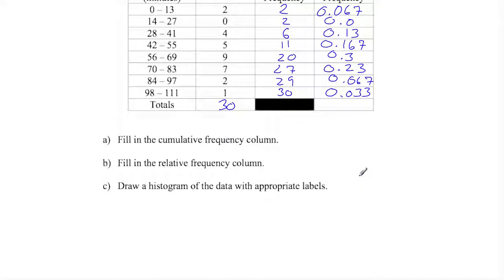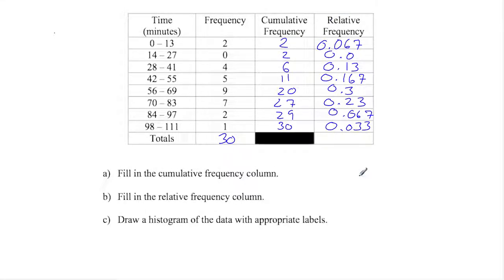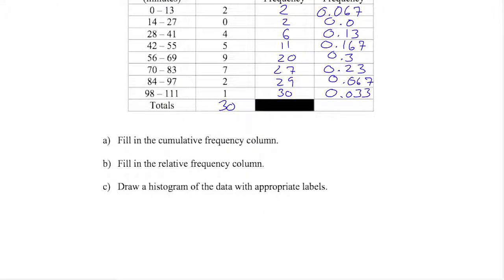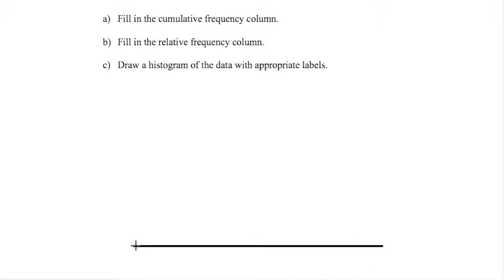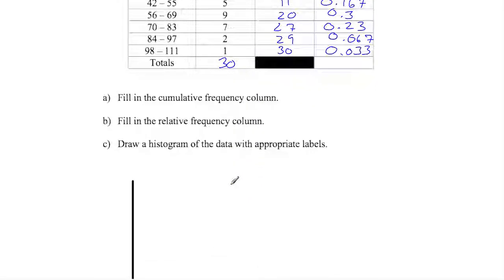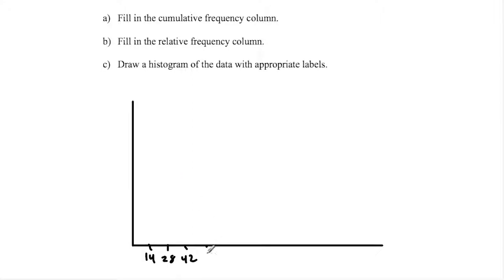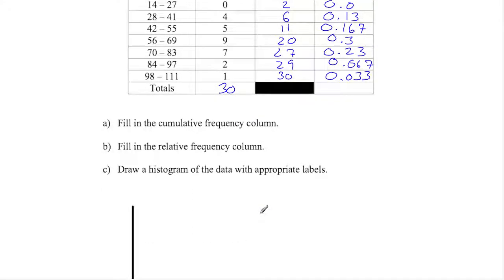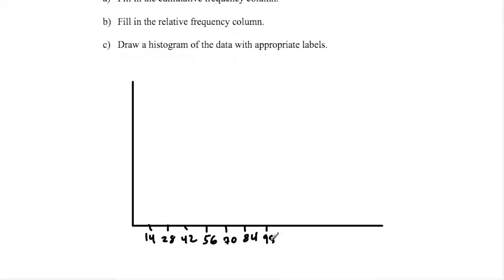Now I want to make a histogram using these values. On my x-axis I'm going to have the starting points for all of those intervals. First is 0, then 14, then 28, then 42, then 56, then 70, then 84, then 98, and then 112.